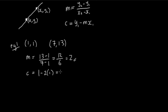So 1 minus 2 becomes minus 1. So now combine m and c into the equation of a straight line, y equals mx plus c, y equals 2x minus 1. And that is our equation of a straight line.